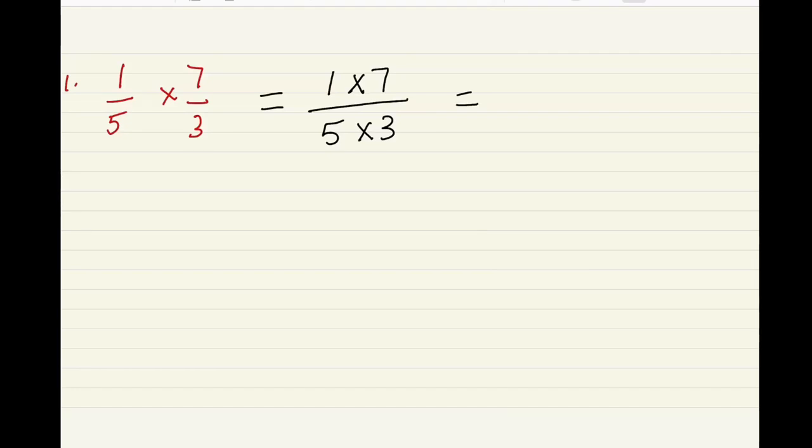1 times 7 is 7, and 5 times 3 is 15. We're gonna leave the answer as this because it's in the lowest term. There's no number that could divide evenly through both numbers, so it's 7 over 15.